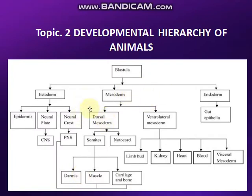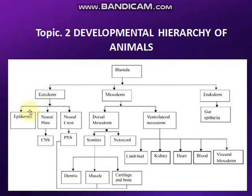Starting mein humne dekha tha ki kaise ek blastula hota hai - isko hum inshallah next topics mein bhi padhenge. Abhi aap 3 germ layers pe focus karein. Blastula jo hai, woh aage se 3 germ layers ko give rise karta hai: number one is ectoderm, number two is mesoderm, number three is endoderm. Aage observe karein ki yeh 3 germ layers kitne zyada structures ko give rise karti hain. Ectoderm aapke paas epidermis bana rahi hai - jo skin related cells hote hain - neural plate bana rahi hai, neural crest bana rahi hai.